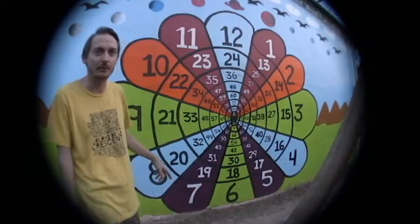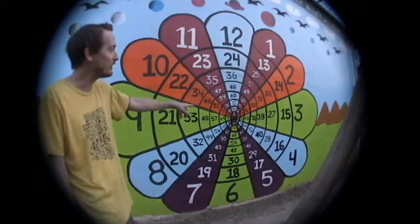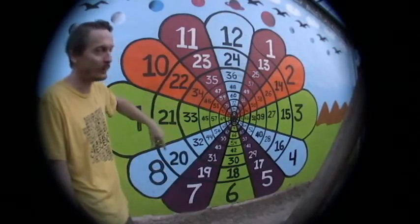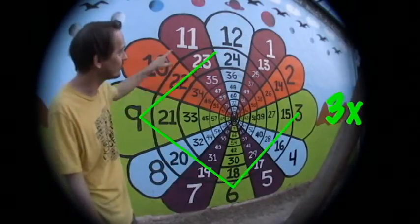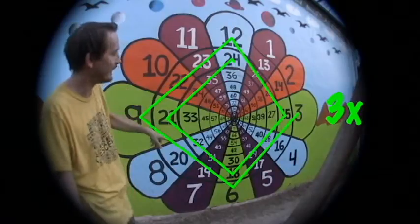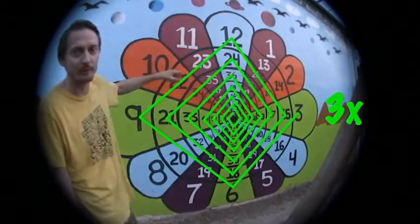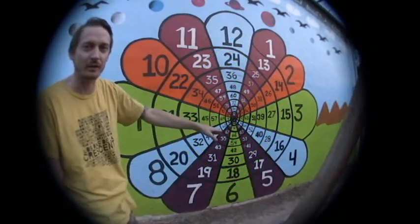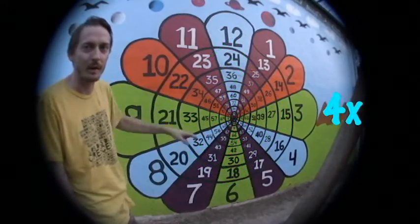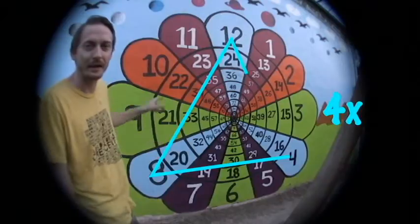Basically we have the number 3 bouncing in a square all the way up through infinity: 3, 6, 9, 12, 15, 18, 21, 24. And 4 bounces in a triangle all the way up: 4, 8, 12, 16, 20, 24, 28.